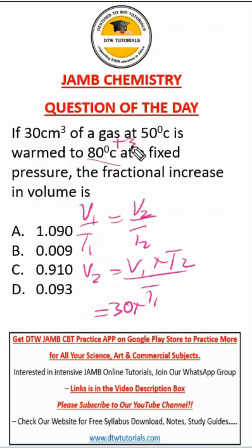T1 also needs to be converted to Kelvin, giving us 323K. When we calculate this, we get 32.8 cm³.